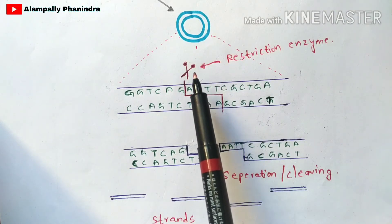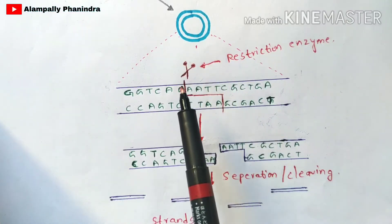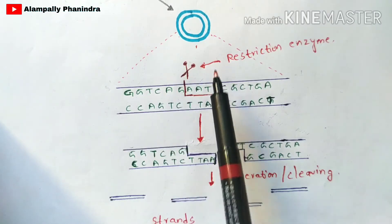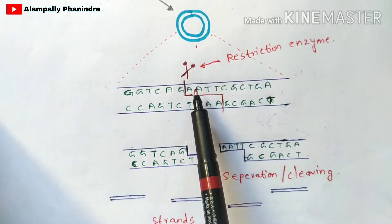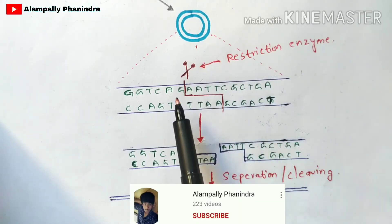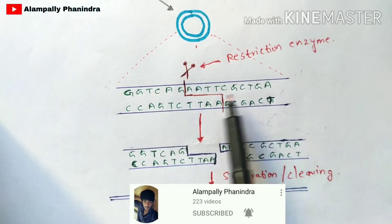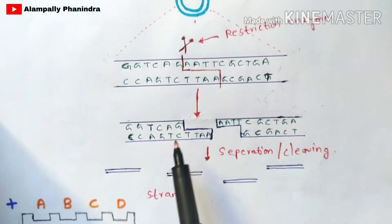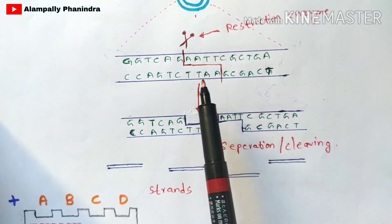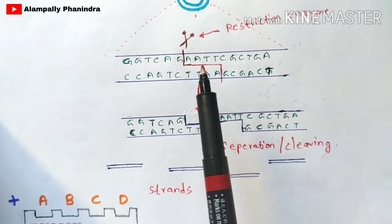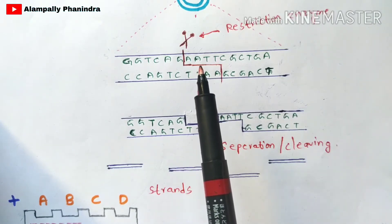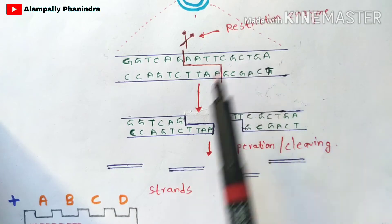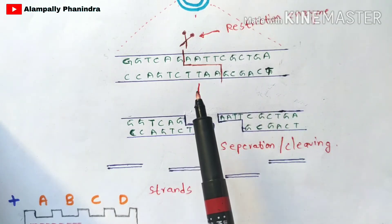Now you are going to add a restriction enzyme to this plasmid. Once the restriction enzyme is added, it will search for a restriction site on the DNA sequence, bind to it, and cleave the DNA. The restriction enzyme cleaves the strand, and both strands get separated. There are two, three, or four restriction sites present, so the restriction enzymes bind to those sites and cleave the DNA — these are called molecular scissors.